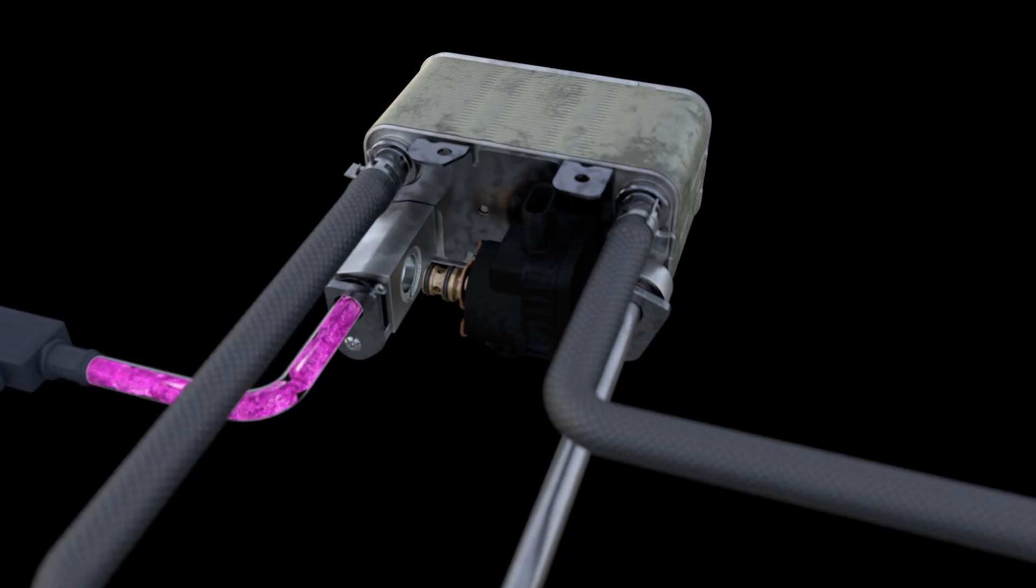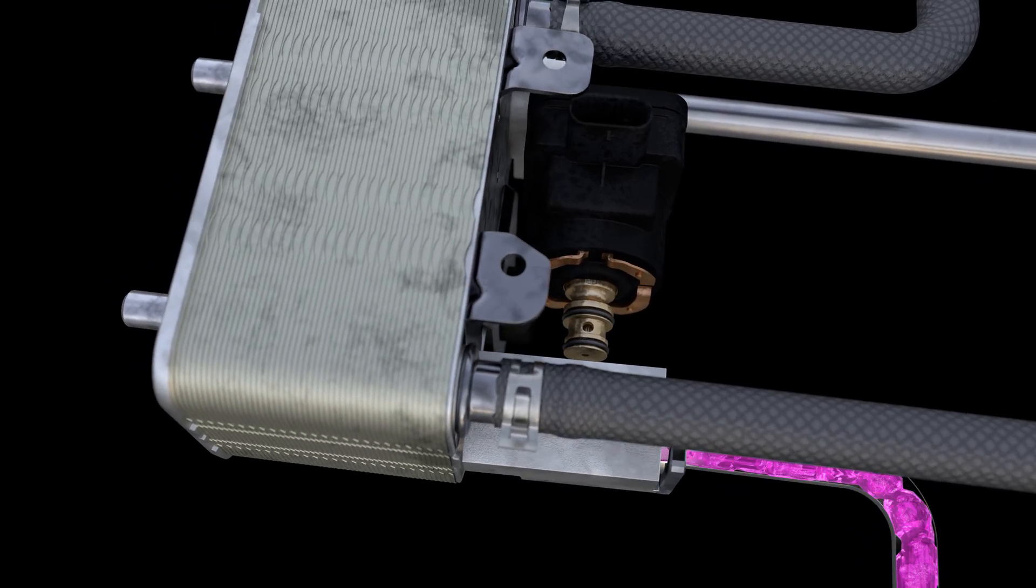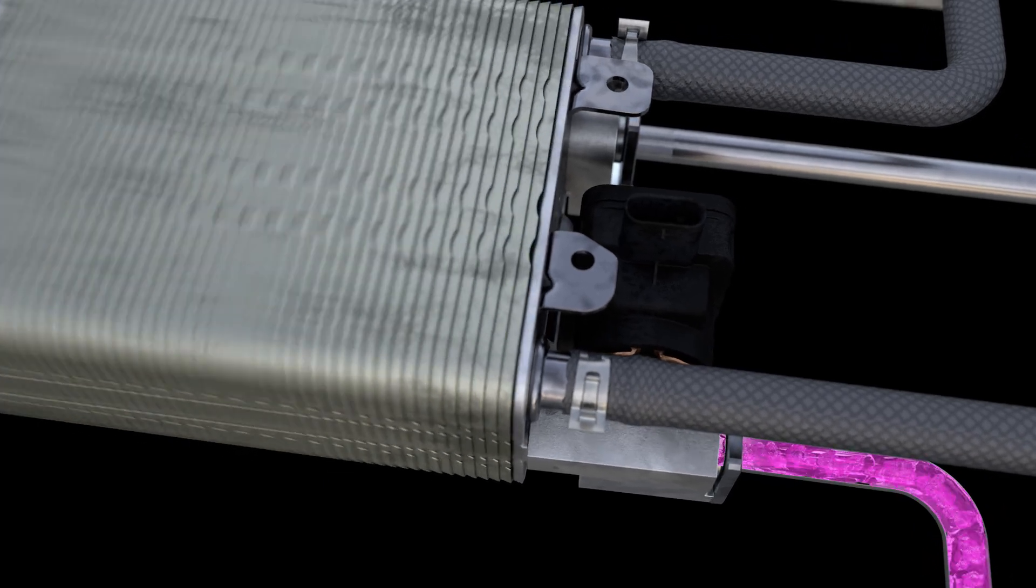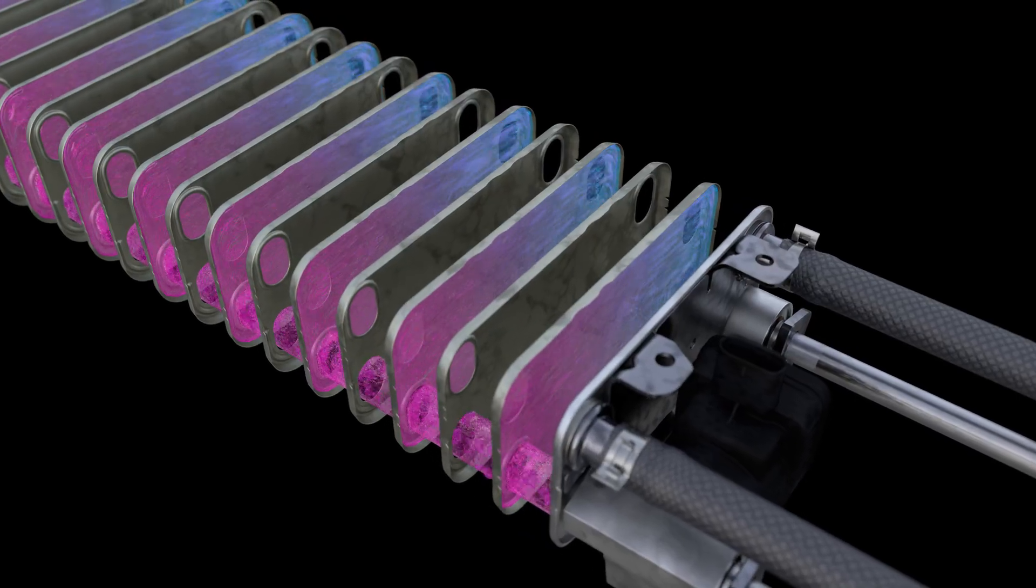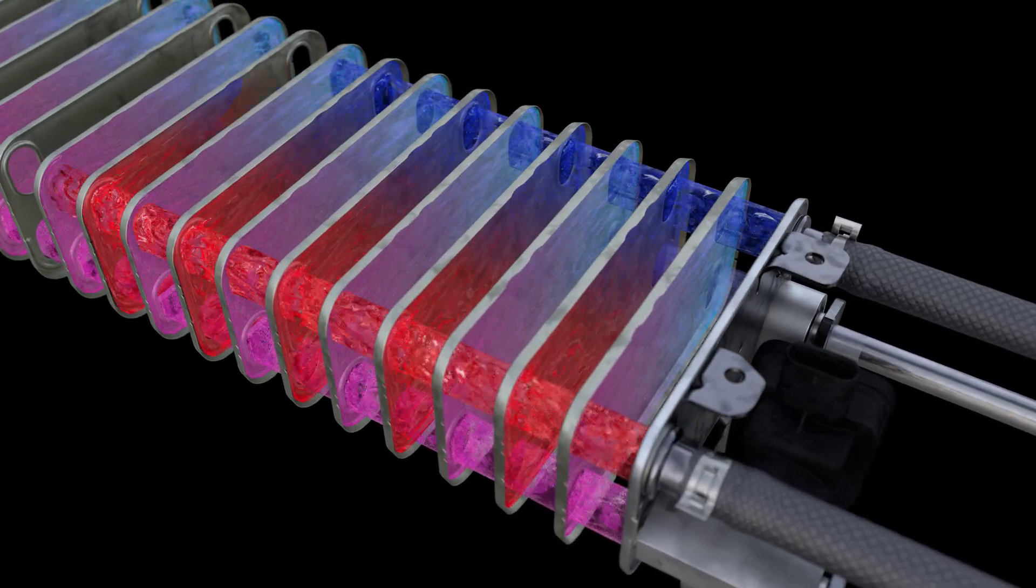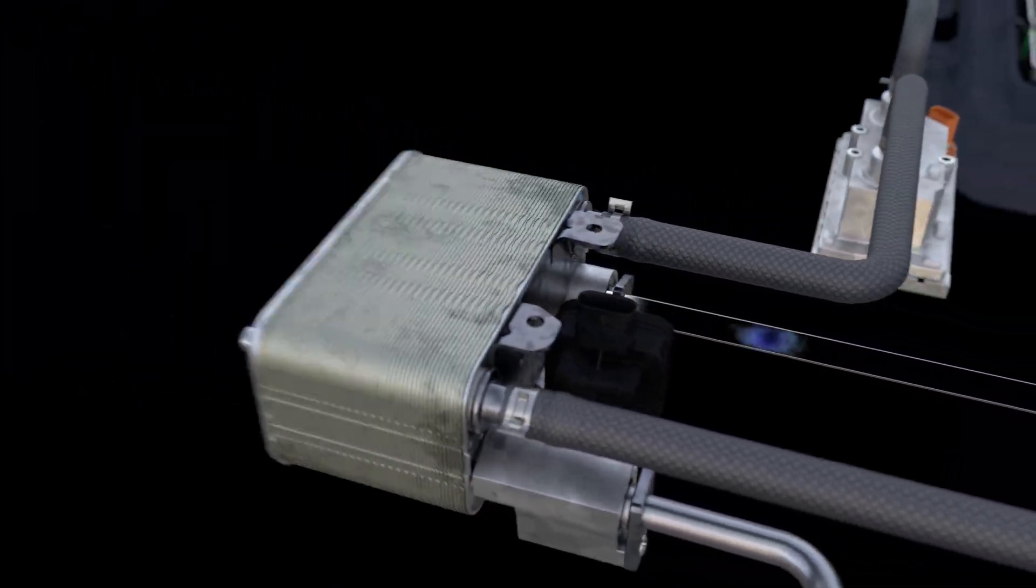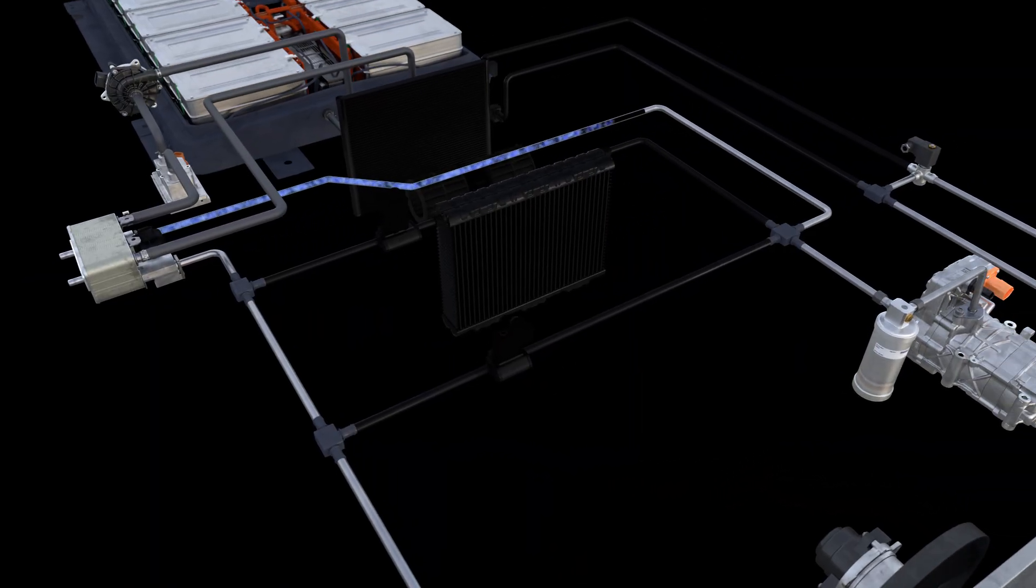Here too, the valve is the transition from the high pressure to the low pressure section. It is controlled electromagnetically and has a small variable cross section to reduce the pressure of the refrigerant. In the heat exchanger, the refrigerant becomes gaseous and cools the coolant, which then circulates through the battery via the filter.